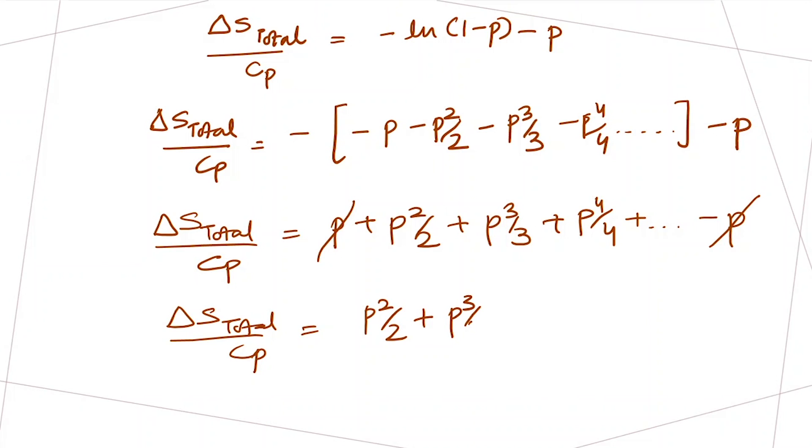This plus minus P will cancel out, so our delta S total over CP equals P squared by 2 plus P cubed by 3 plus P to the fourth by 4 and so on. This will always be positive whether P, which is 1 minus TI by TF, is positive. This change in entropy will always be positive.